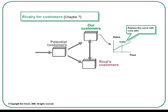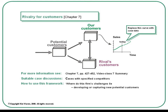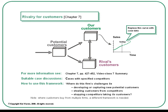The strategy dynamics analysis of competitive rivalry can get quite complex, but here too it's possible to simplify a framework and use it for general class discussion. You'll find more information on this framework in Chapter 7 and in the video class 7 summary. This framework is most suitable for cases where specific competitors are identified and where some information is available about their customers and sales. You can ask questions about where a particular firm's challenges lie — is it struggling to develop or capture new potential customers, or is it engaged in a battle to steal customers from its competitors? Alternatively, is it fighting to stop its own customers being taken away? Note that where customers buy from multiple firms, a different framework is needed, explained also in Chapter 7.